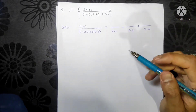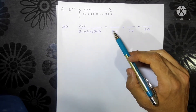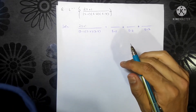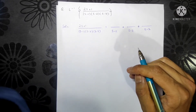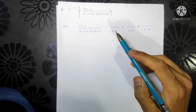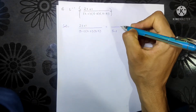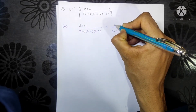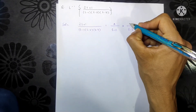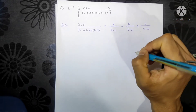The question is: what do we put in the numerator of each term? It depends on the denominator. Since the denominator is a linear polynomial — the power of s is one — we put a variable in the numerator. So I'll put A for the first, B for the second, and C for the third.